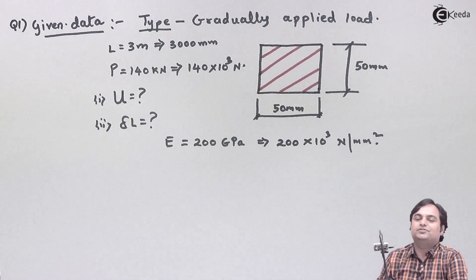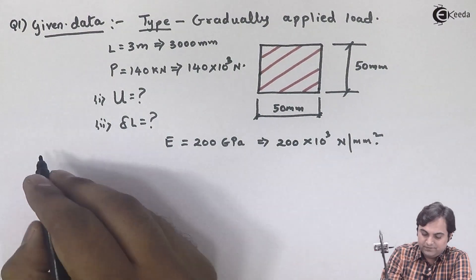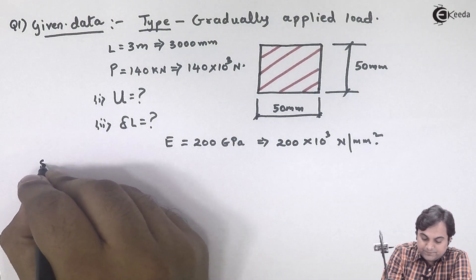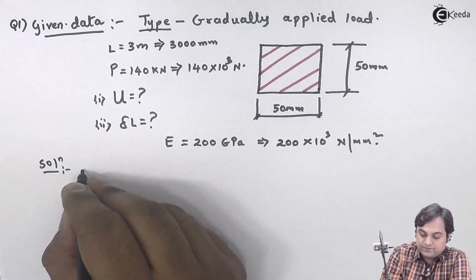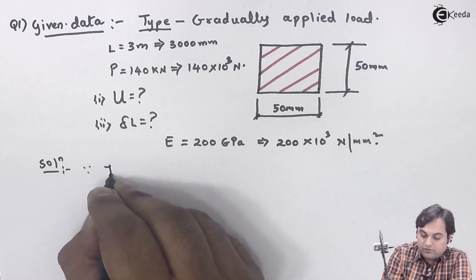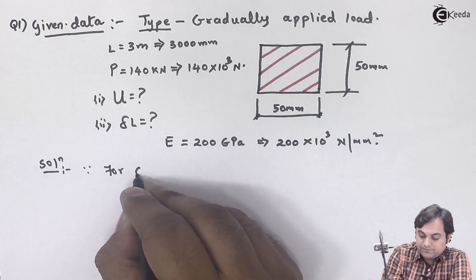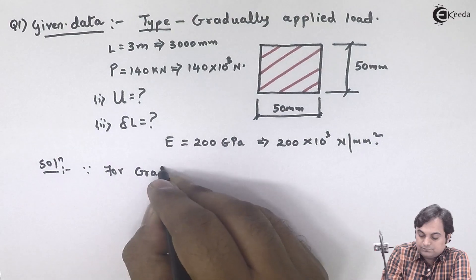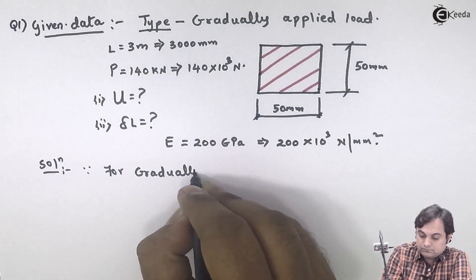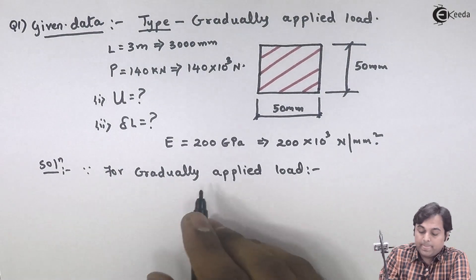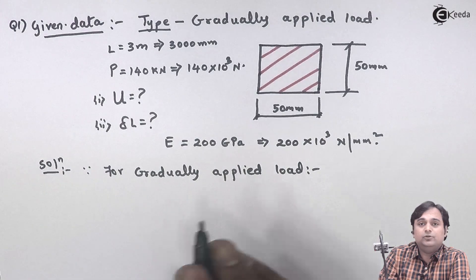Now, once we know that it is gradually applied load, we can easily start solving this problem. So I will write the solution here. Since for gradually applied loads, we know that stress is given by load upon area.